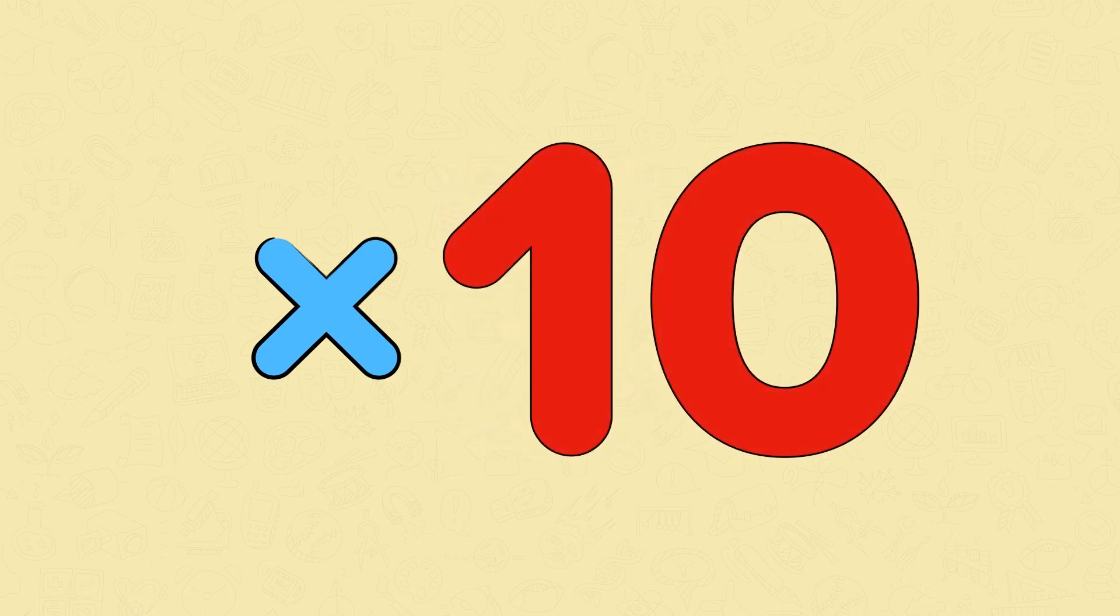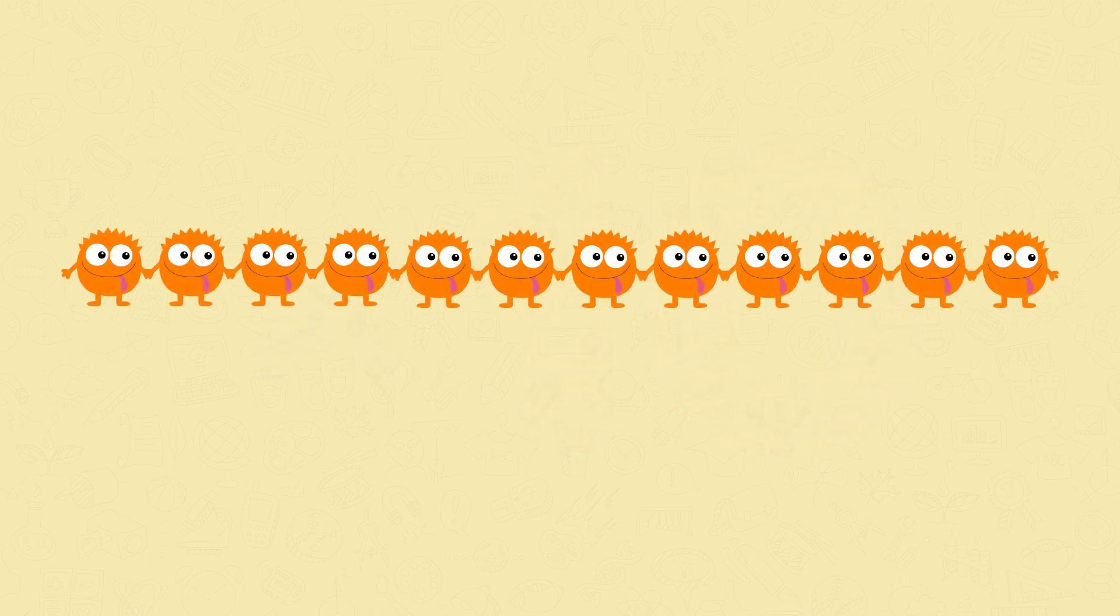Before we start multiplying we need to be able to count in 2s, 5s and 10s. Let's start by counting in 2s. Here we have 12 monsters and each monster has 2 eyes. We're going to count in 2s to find out how many eyes there are in total. See if you can count with me.